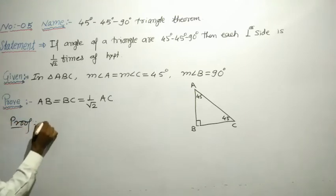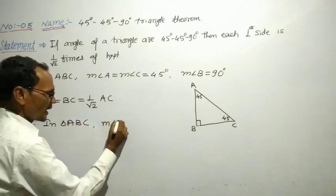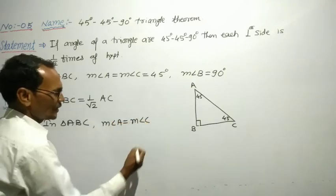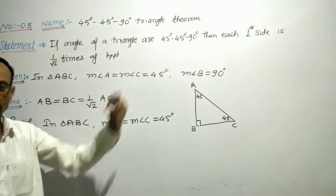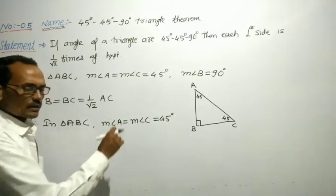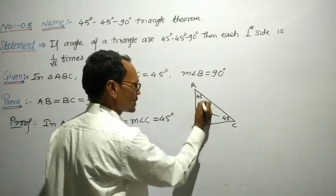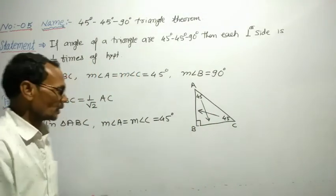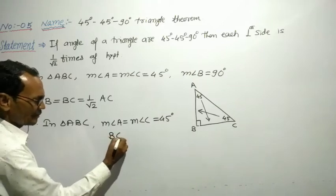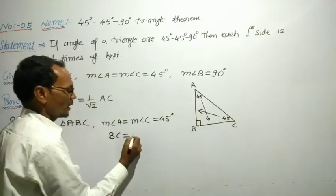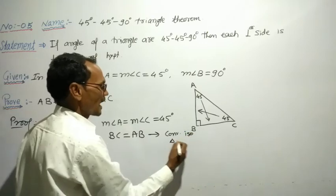In triangle ABC, we are given that measure of angle A equals measure of angle C, both equal to 45 degrees. By the converse of the isosceles triangle theorem, if two angles are equal, then the sides opposite to them must be equal. The side opposite to A is BC, and the side opposite to C is AB. Therefore, BC equals AB. The reason is the converse of the isosceles triangle theorem.